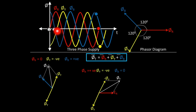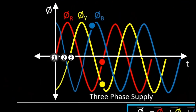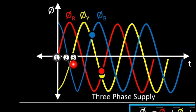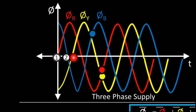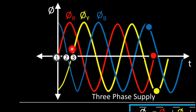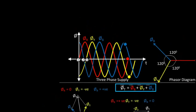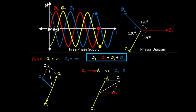Next, consider instant 3. At instant 3, we can see that φY (yellow flux) is 0 — it intersects the x-axis. φR is upward, so it is positive. And φB is downward, so it is negative. So for instant 3: φR = positive, φY = 0, and φB = negative.